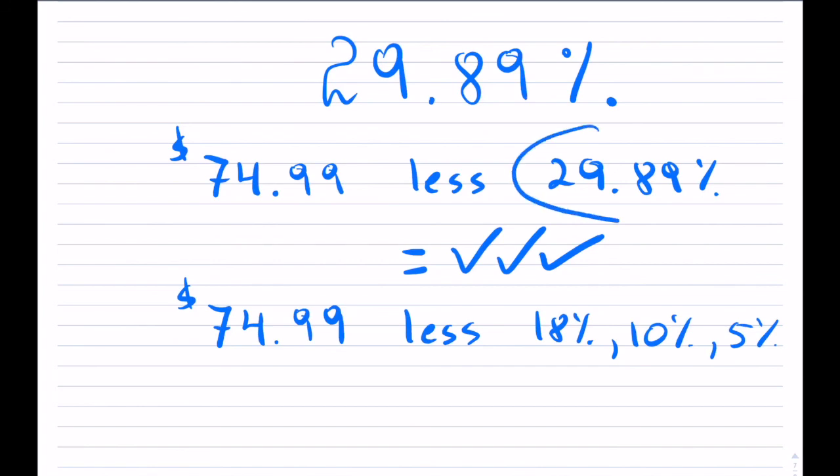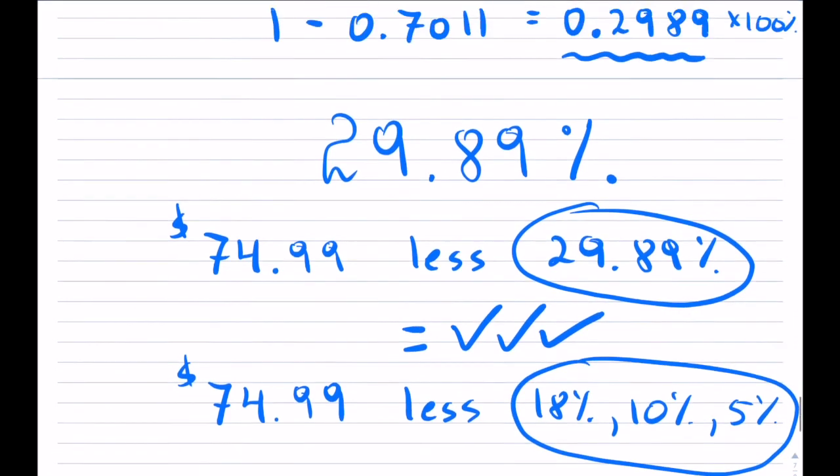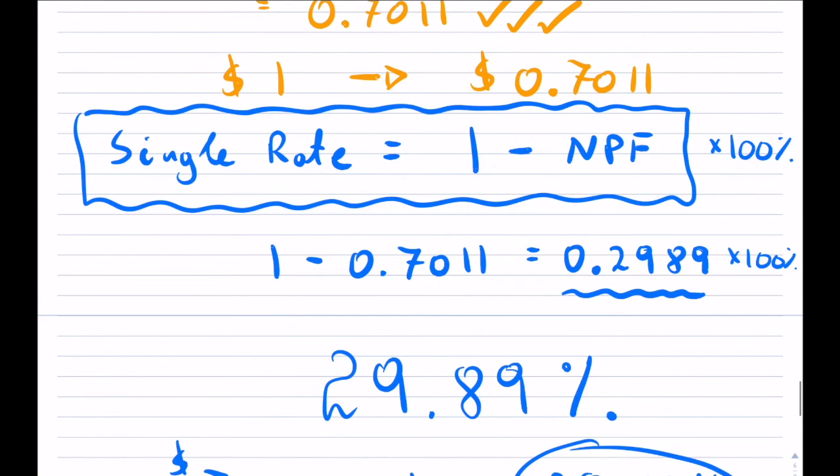So that is your single rate that you have, and it is equivalent to doing this discount series, and this is how you find it, always 1 minus the net price factor.